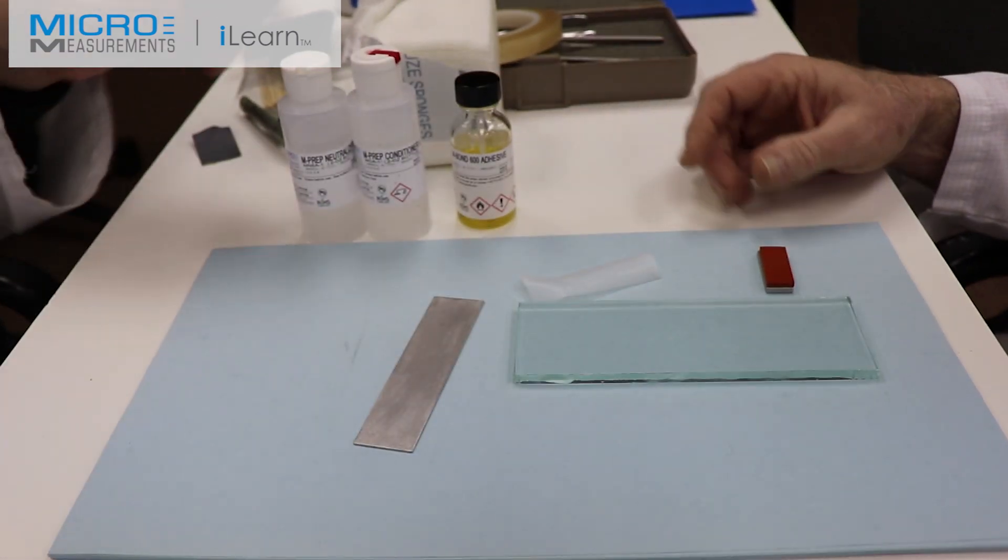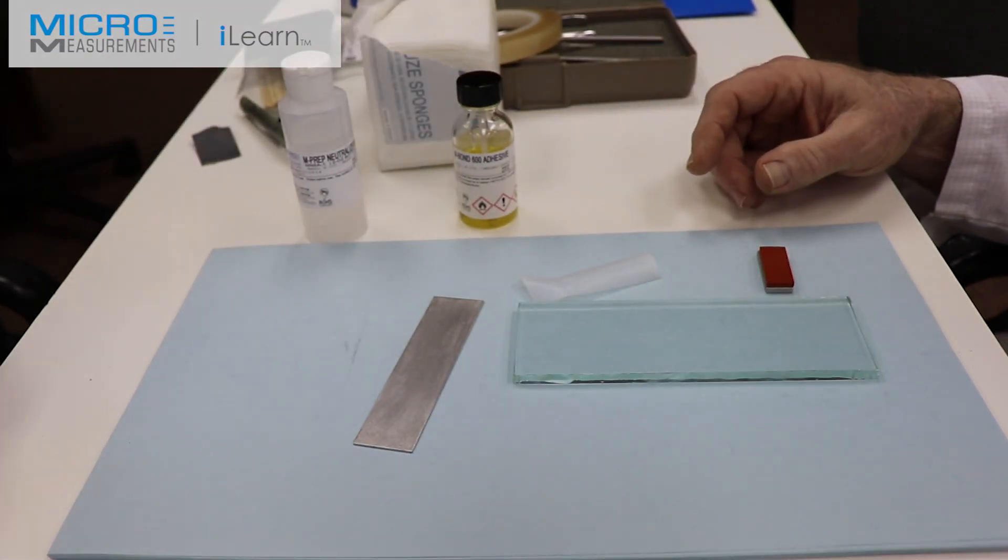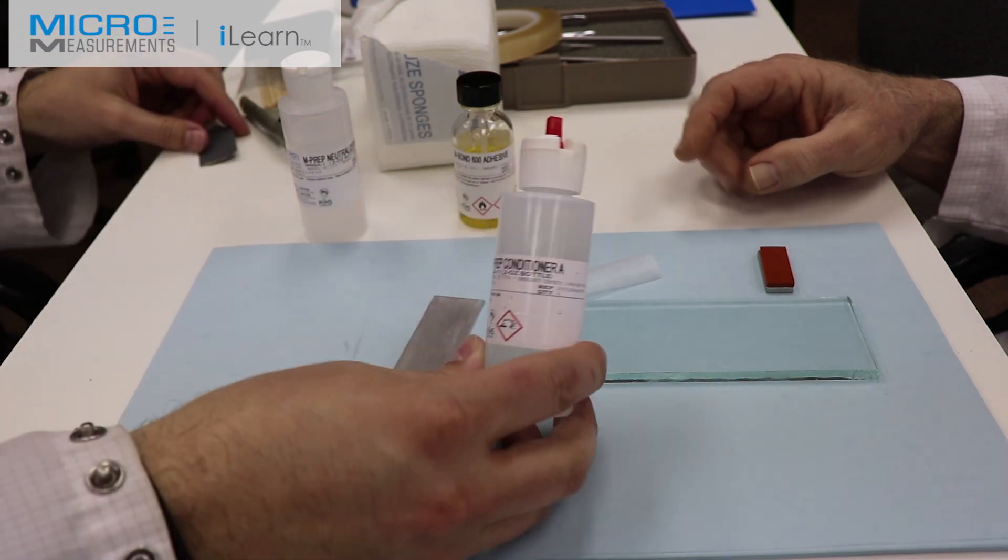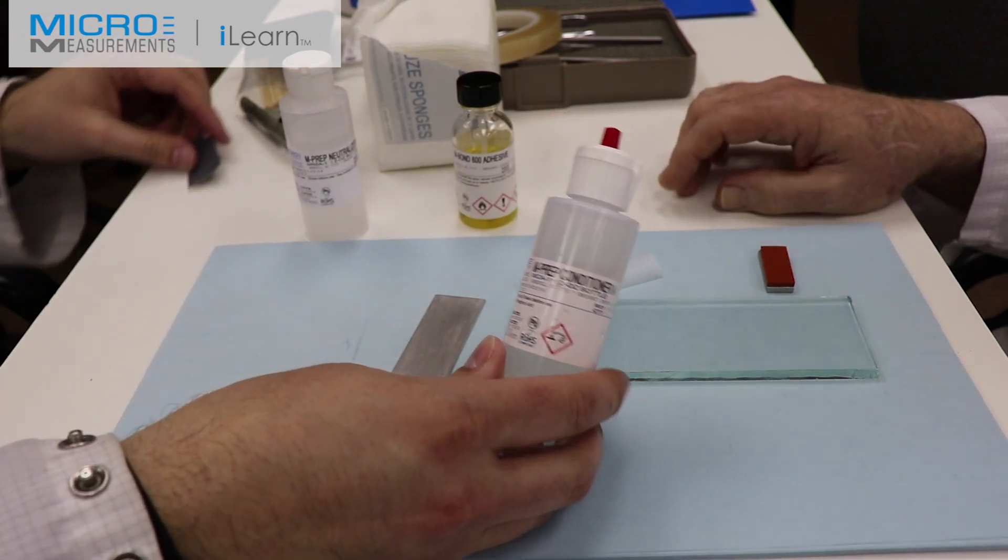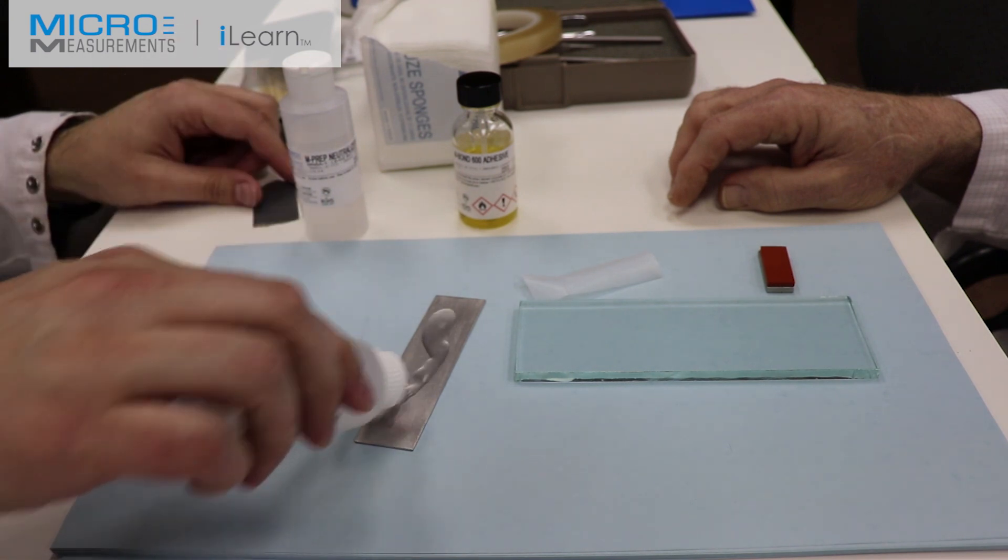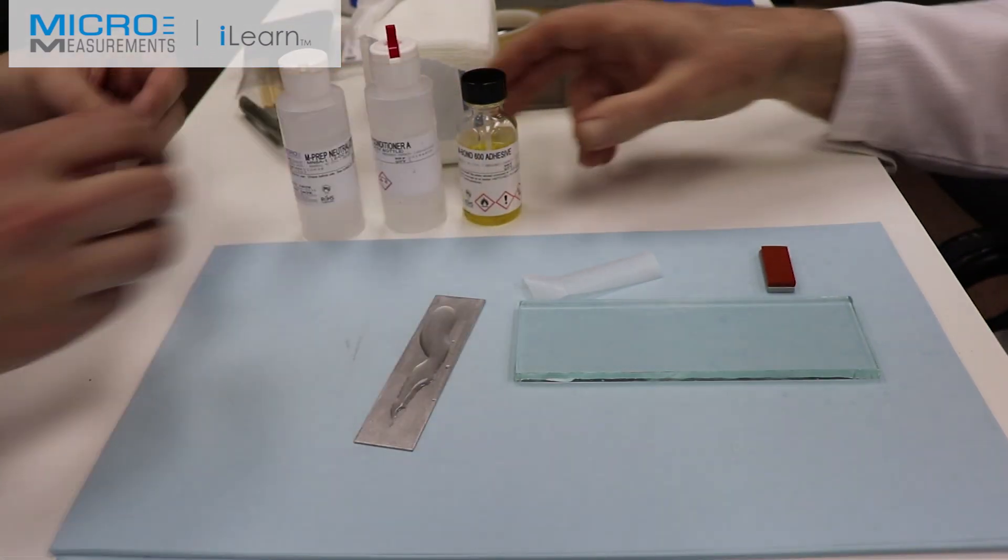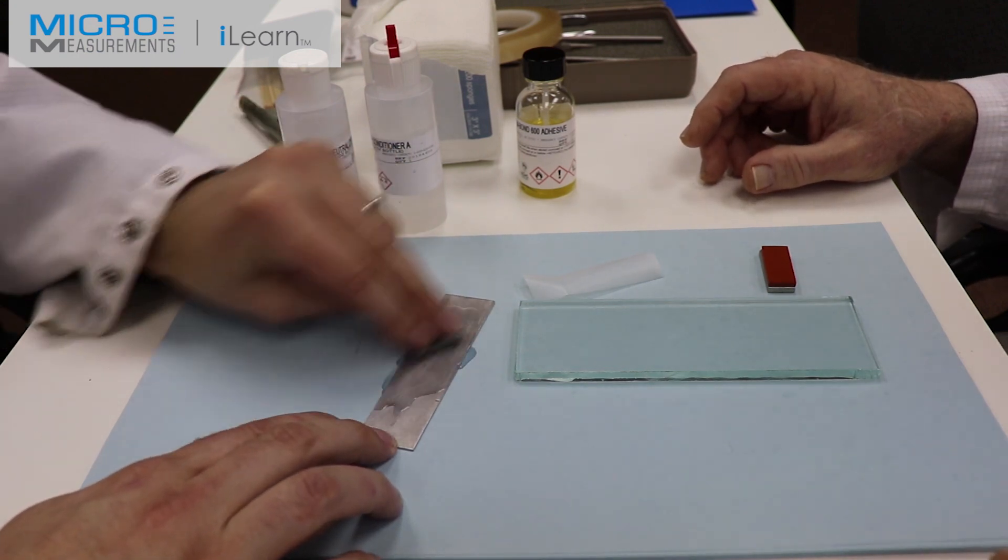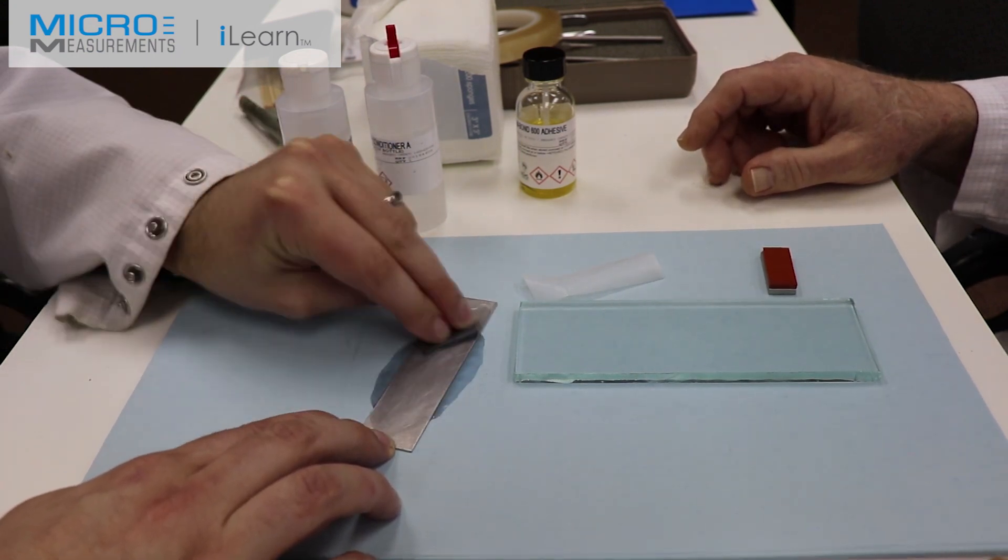Next step, take another piece of the 400 grit silicon carbide abrasive paper using the Conditioner A, the mild phosphoric acid solution. We're going to wet abrade with the 400 grit silicon carbide abrasive paper. Be sure the Conditioner A is flooded on the surface. You don't want it to dry out while you're abrading.